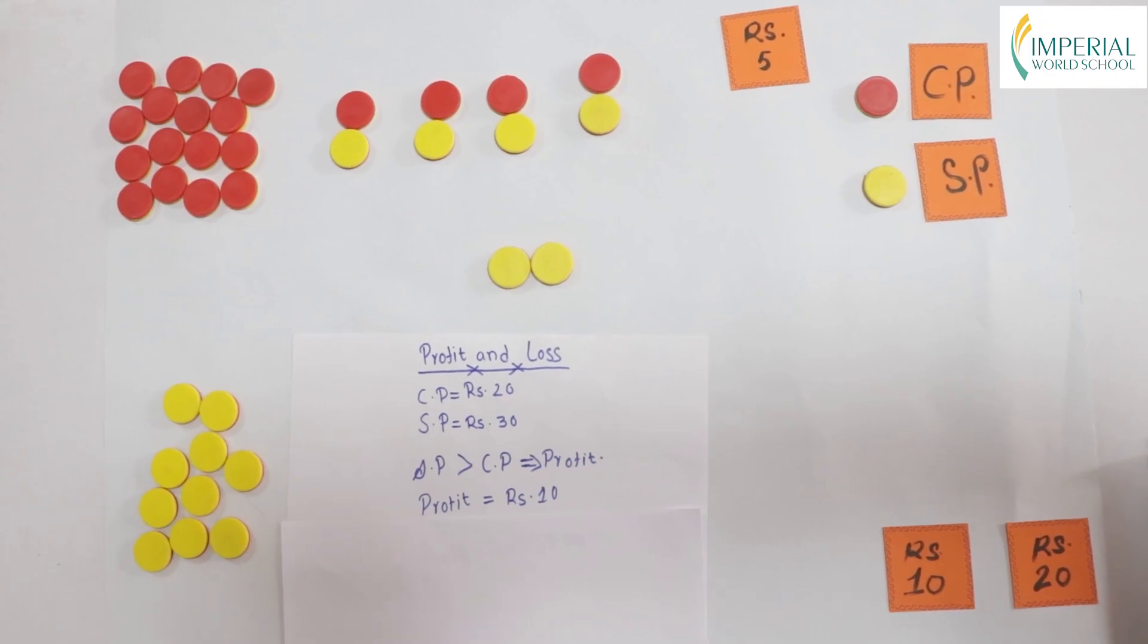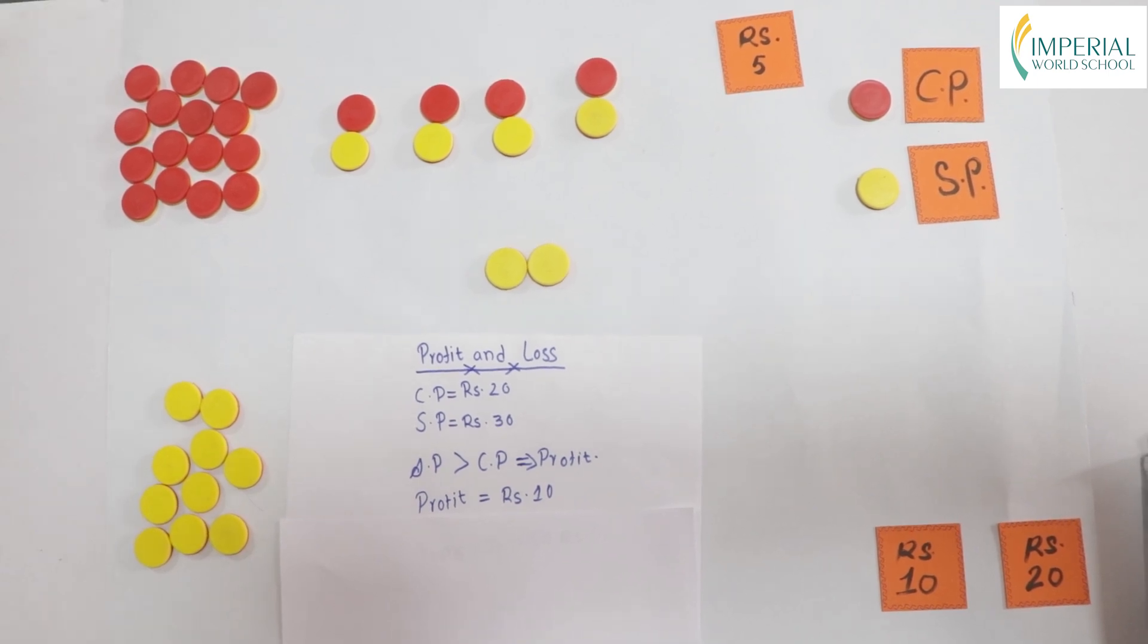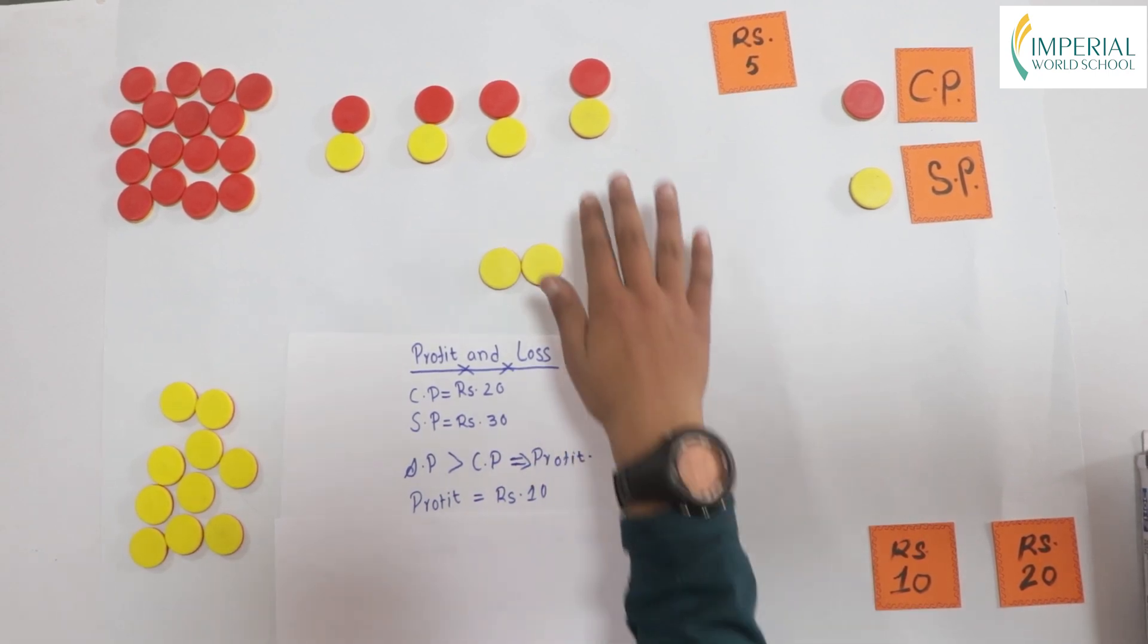Now, let's find our profit percentage. As we know that with respect to cost price, we find our profit percentage. Now, let's collect them back together.